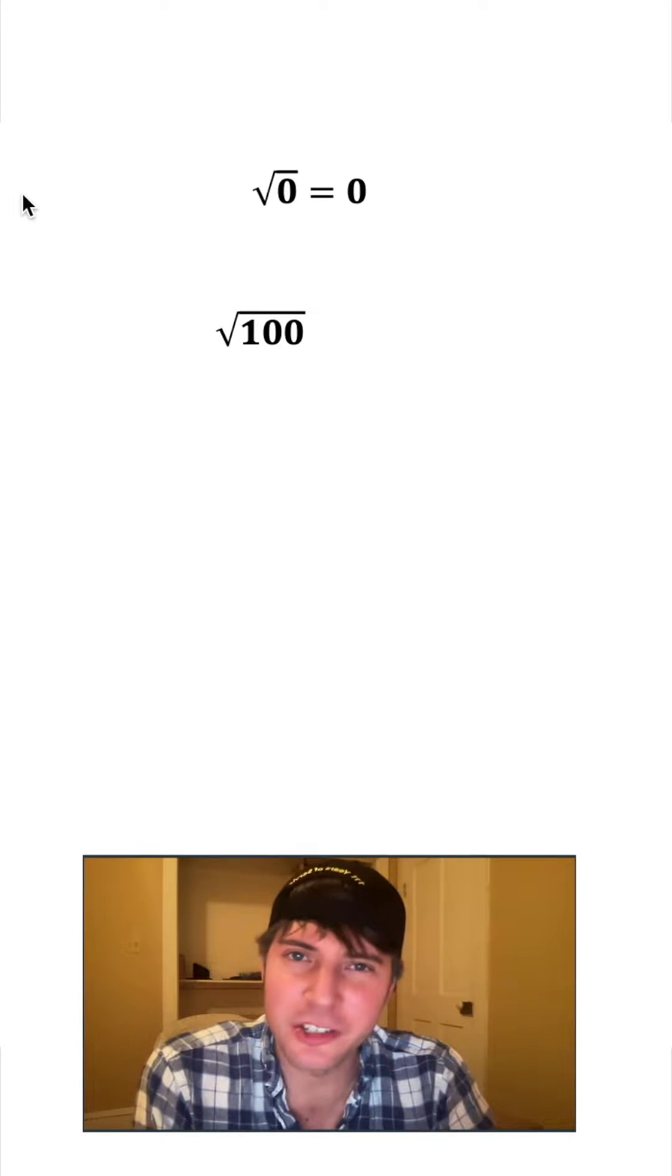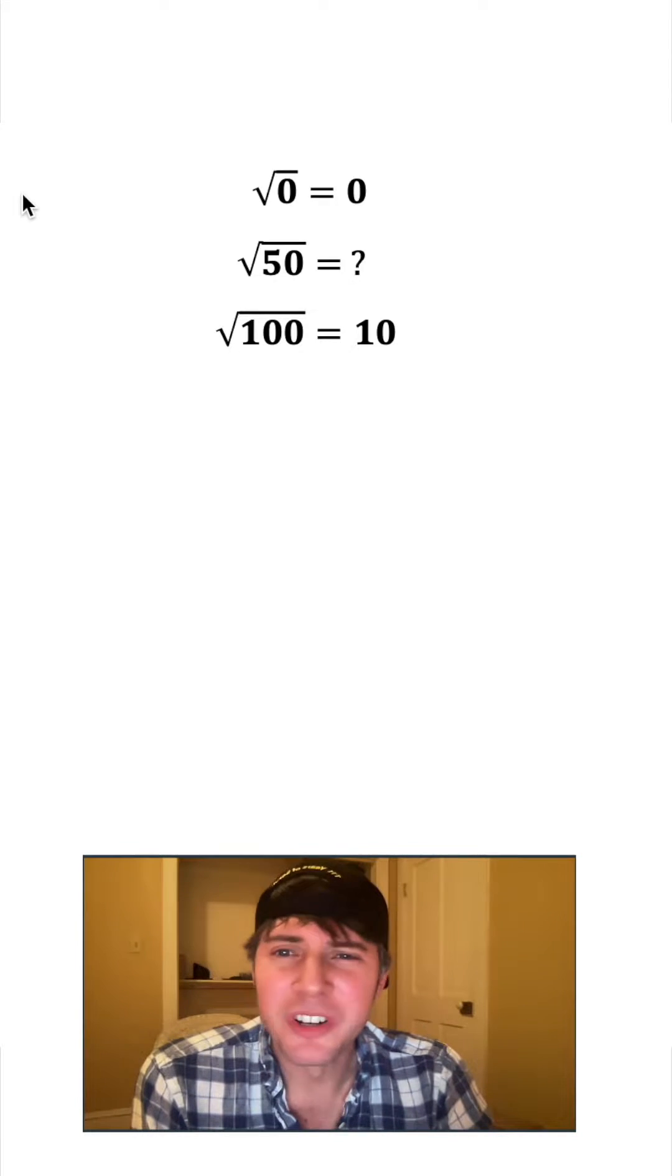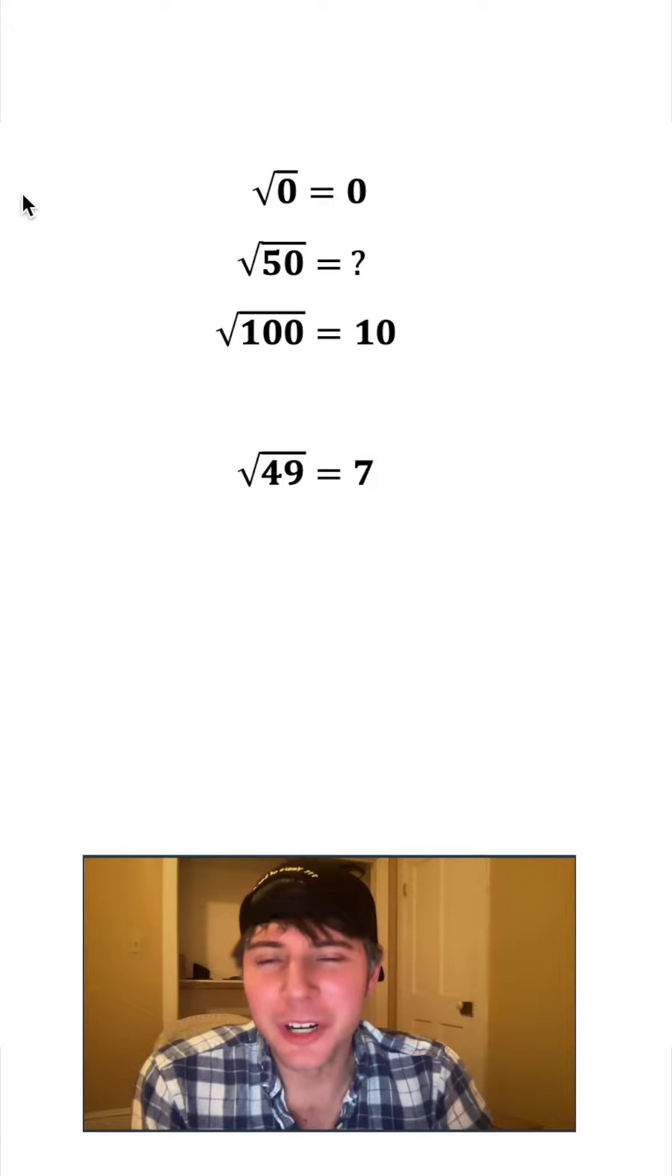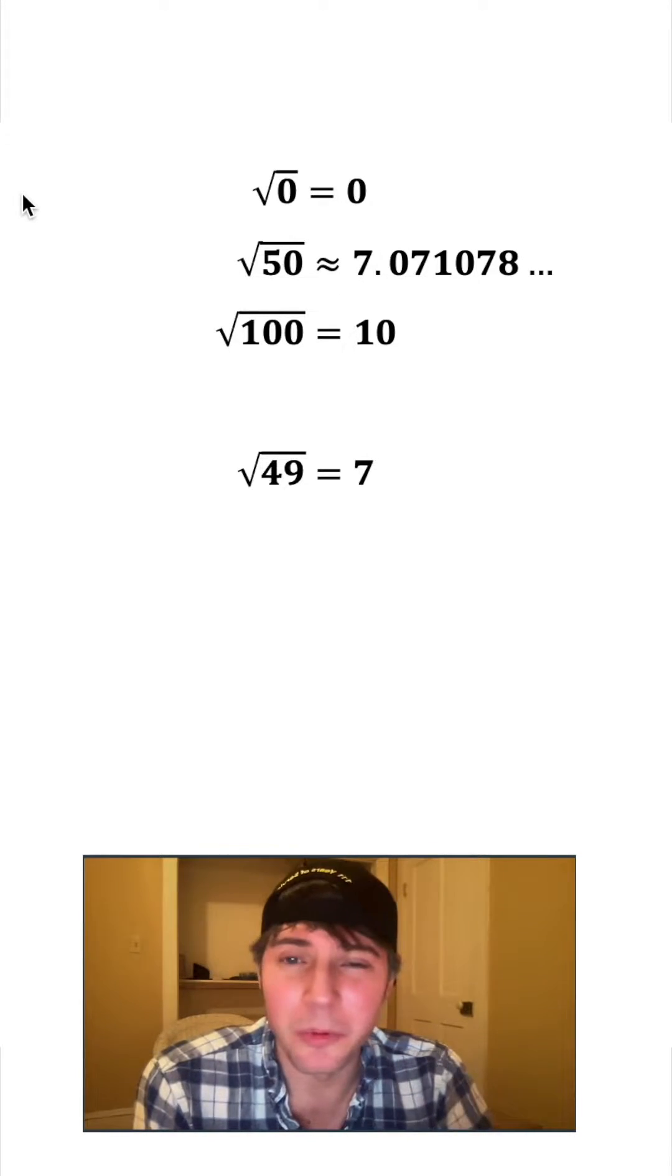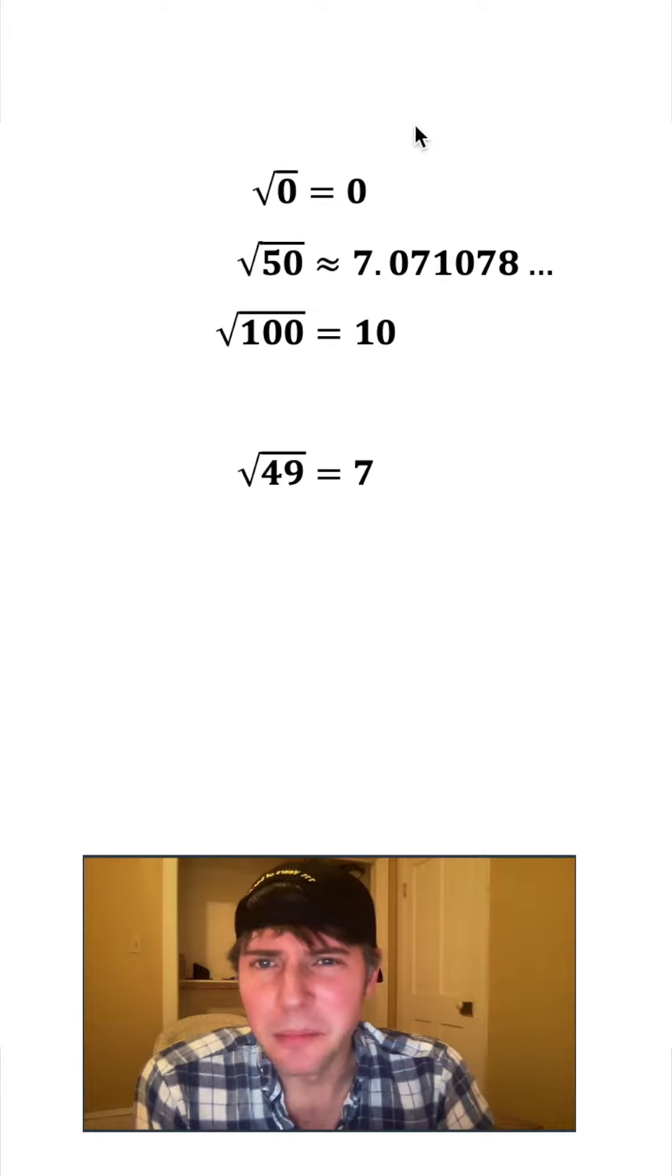Square root of zero is equal to zero and square root of 100 is equal to 10. What is the square root of 50? Well, square root of 49 is 7, so square root of 50 is a little bit more than that. It's about 7.071078. Is that weird that it's not in the middle of them?